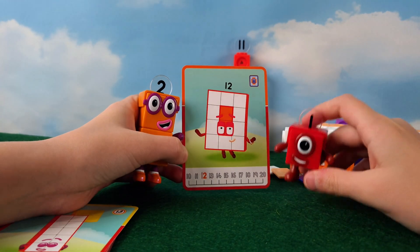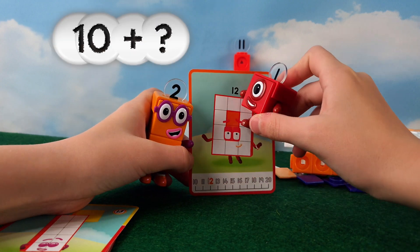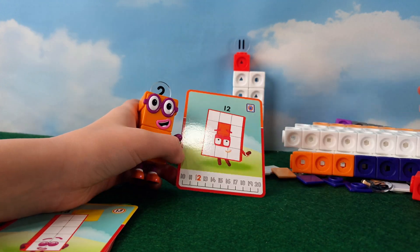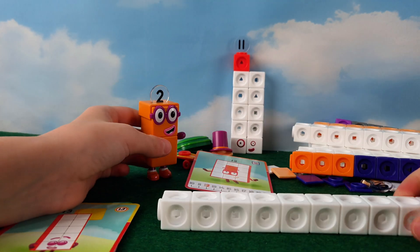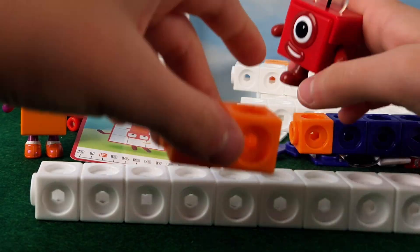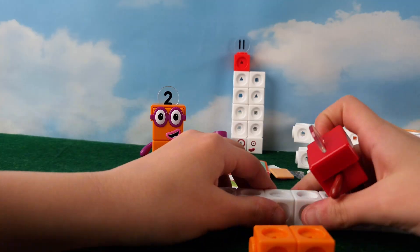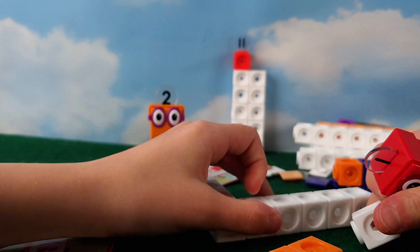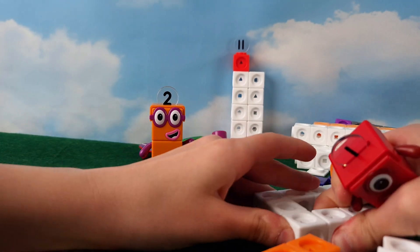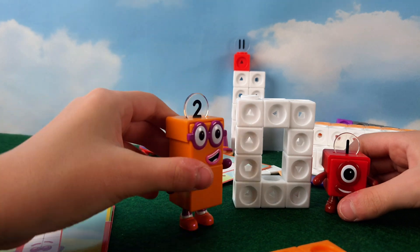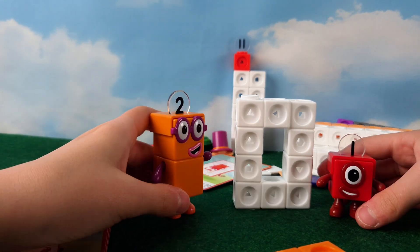To make number twelve, you need ten white blocks and two orange blocks. Let's make him. We already know that this is ten blocks. I counted them earlier, remember? And now we need two orange blocks. Let's make him. Take this block off to the side. Squish! Number twelve. I think you're forgetting something, number one.